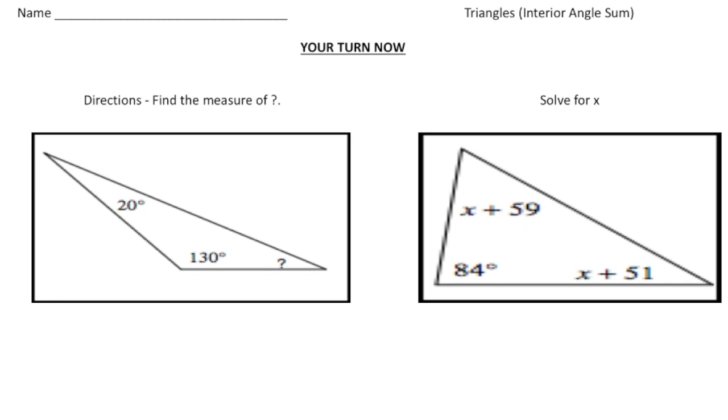Welcome back. Let's see how you did with these practice problems. So the first one, we had to find the measure of the question mark. And again, we know that the three angles together are going to add to 180 degrees. So our equation is going to be 20 plus 130 plus question mark equals 180. And I know that 130 plus 20 gives you 150. So 150 is 30 away from 180, which means the question mark is going to have a value of 30 degrees. And there it is.